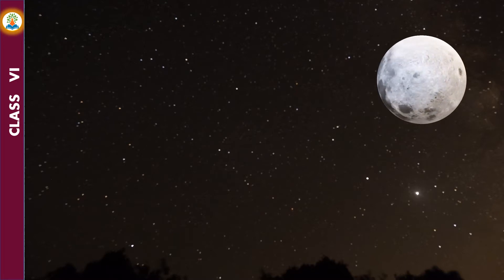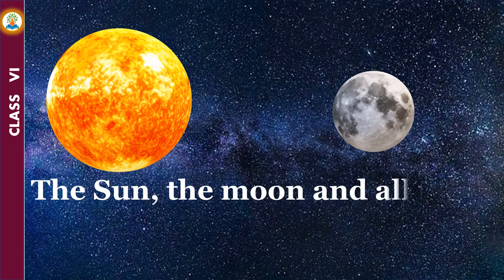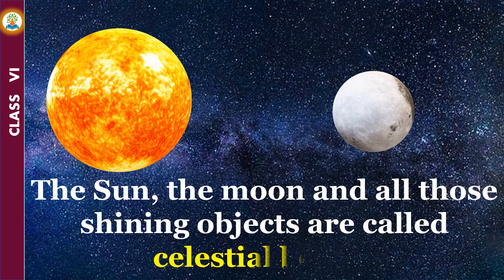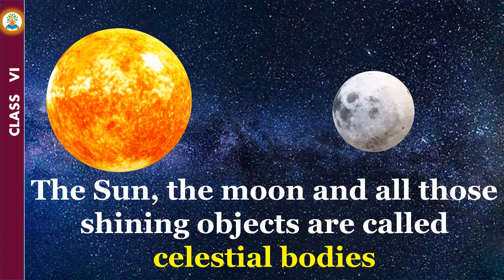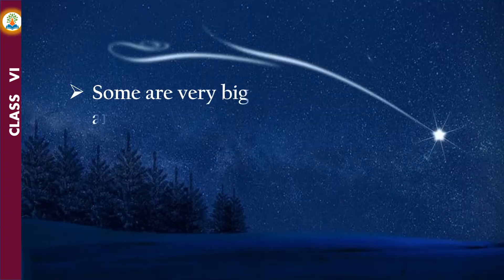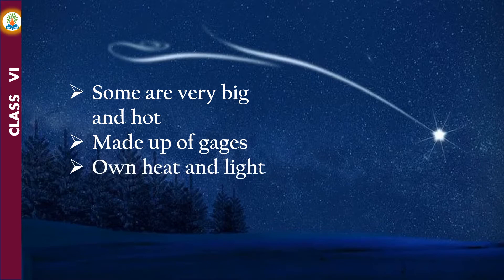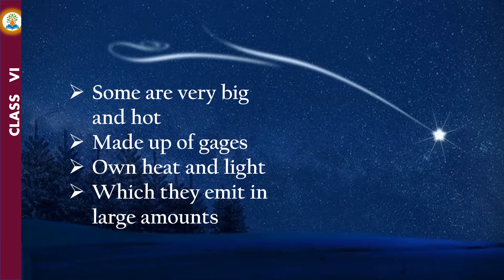The sun, the moon, and all those shining objects are called celestial bodies. Some celestial bodies are very big and hot. They are made up of gases and have their own heat and light which they emit in large amounts. These celestial bodies are called stars. The sun is a star.